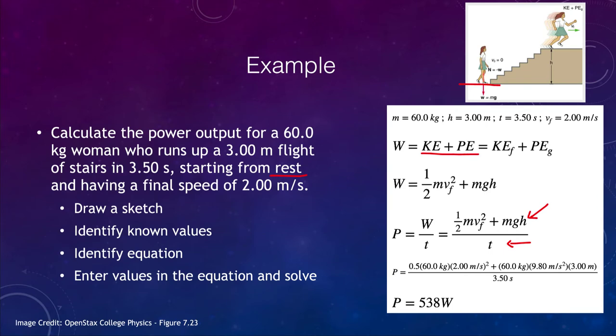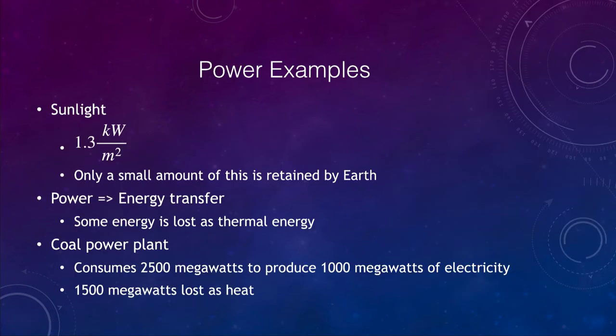So let's look at some examples of power here. For example, sunlight gives us about 1.3 kilowatts per square meter. That gives you some idea of the intensity of the sun, because only a tiny portion of this is actually retained by Earth. So that is sunlight, that's one example of power. And power also gives us energy transfer, it's a way of transferring energy.